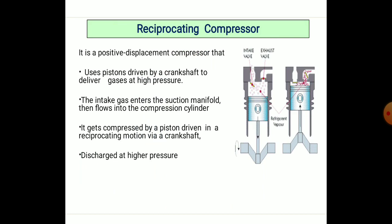Reciprocating compressors use positive displacement with a piston driven by a crankshaft to deliver gases at high pressure. The intake gas enters the suction manifold, then flows into the compression cylinder where it gets compressed by the piston in reciprocating motion via the crankshaft, and is discharged at high pressure.